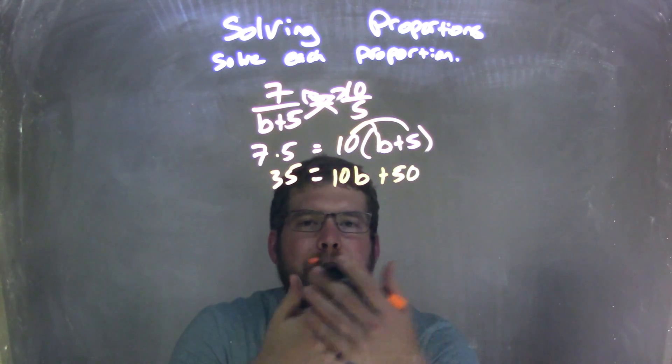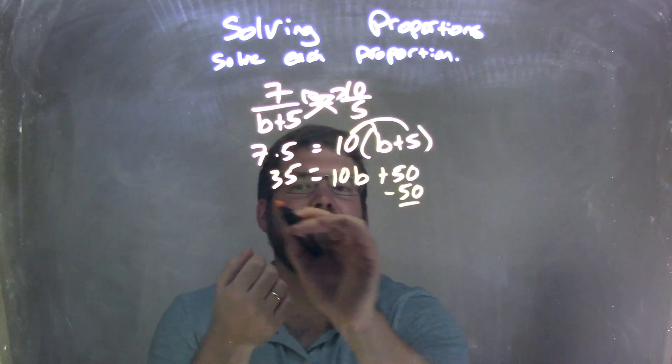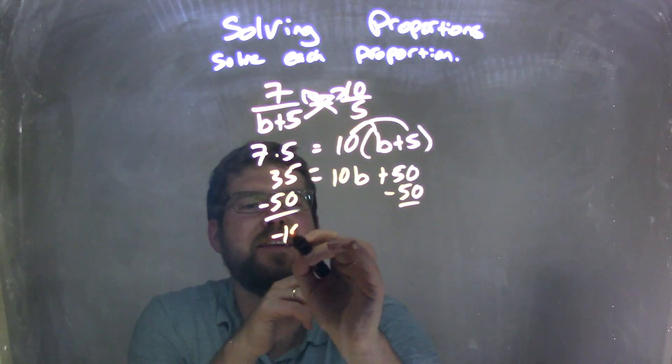Now, I need to combine my like terms, so I'm going to subtract 50 from both sides, leaving me with 35 minus 50, which comes out to be negative 15.